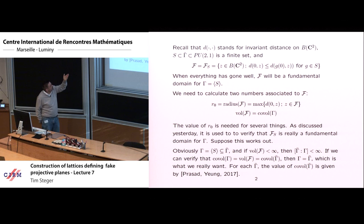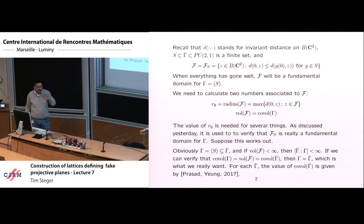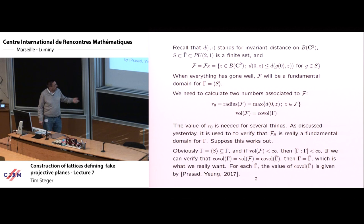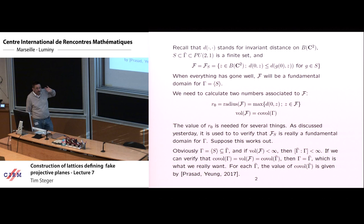This group gamma, which is generated by S, is certainly inside gamma-bar, because the elements in S are in gamma-bar. And if the volume of the fundamental domain is finite, then obviously its index in gamma-bar is finite. However, all of that is not enough to say that it's all of gamma-bar — it might be one eighth of gamma-bar. The way we check this is to check the co-volumes. If the co-volume of gamma and the co-volume of gamma-bar match, then we can be sure that gamma is really all of gamma-bar, and that's what we want.